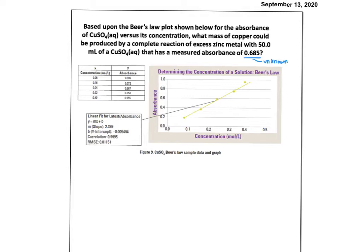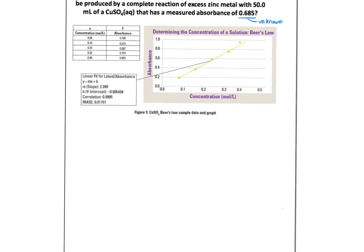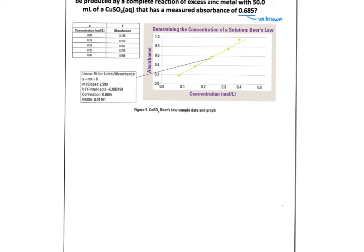Y equals MX plus B. So we get - all right, we're still going I think, sorry about that. Let's go up like this. Y equals, the slope is 2.399 times X and the Y intercept. So there's our equation.